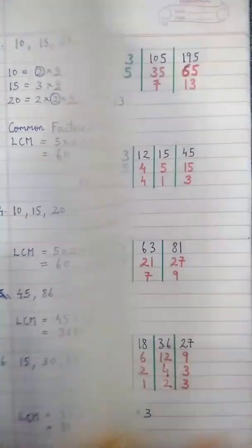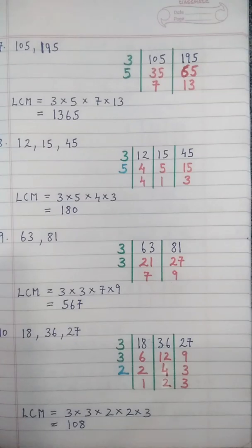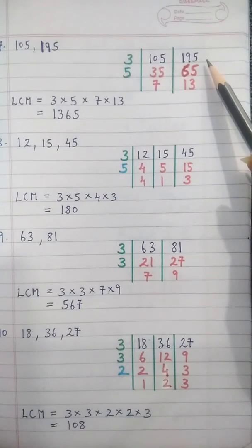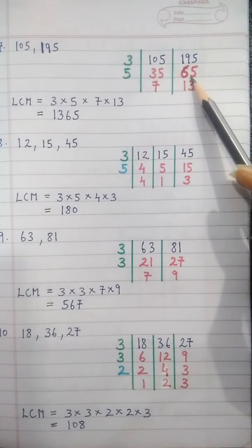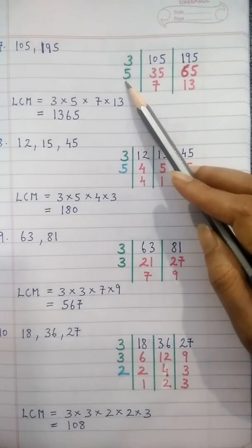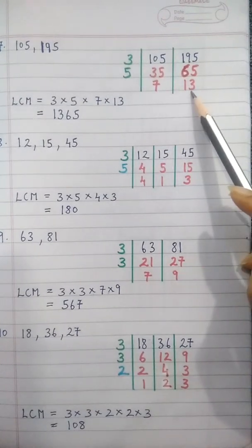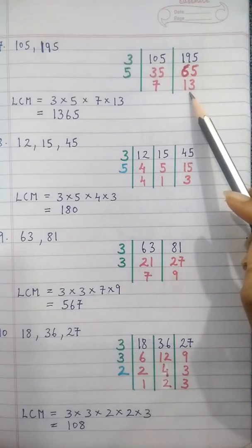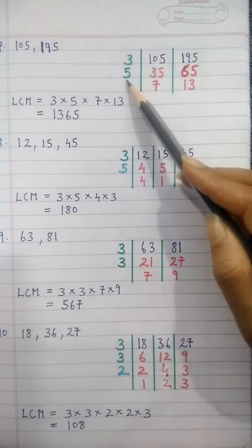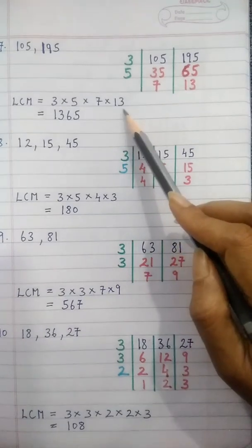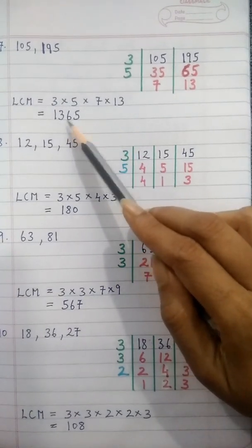Sum 7: 105 and 195. Factorize by 3 to get 35 and 65, then factorize by 5 to get 7 and 13. Since 7 and 13 cannot be factorized further, we leave them as they are. LCM = 3 into 5 into 7 into 13 = 1365.